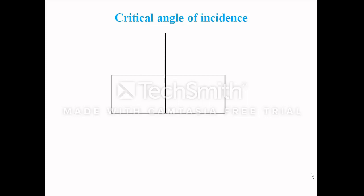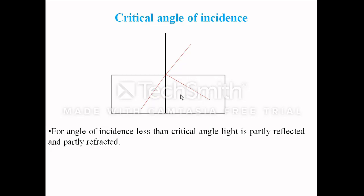Consider a glass slab with a normal to the slab. There is a light ray incident from a denser medium entering into a lighter medium, say air. If we consider this as an incident ray, then it is partly reflected and partly refracted. The angle made by this incident ray with the normal is known as the angle of incidence. The light ray is partly reflected and partly refracted, and this happens when the angle of incidence is less than the critical angle.